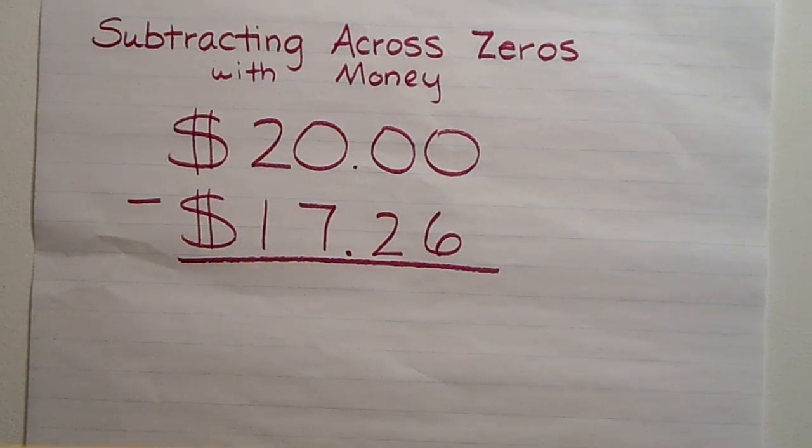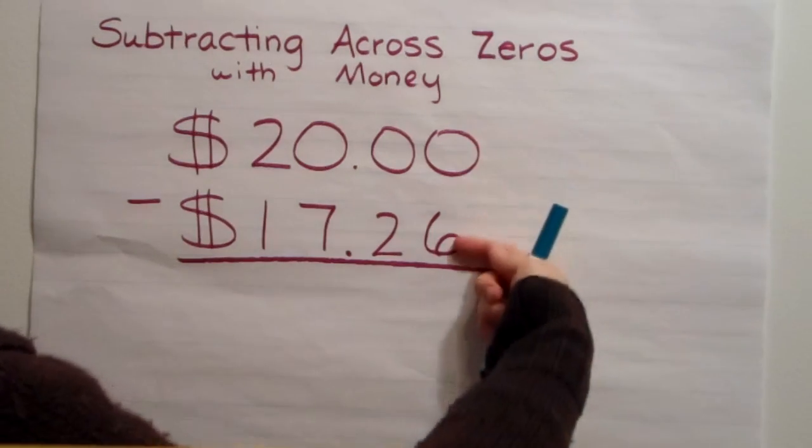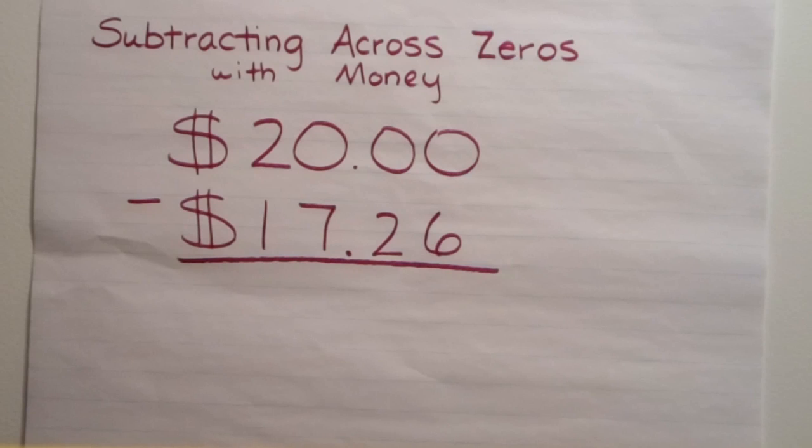Subtracting across zeros with money. The first thing you want to do when you're subtracting with any number is go to the smallest place value. In this case, the smallest place value is going to be the hundredths place.